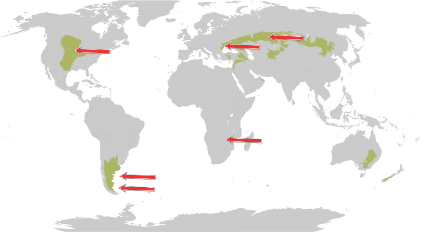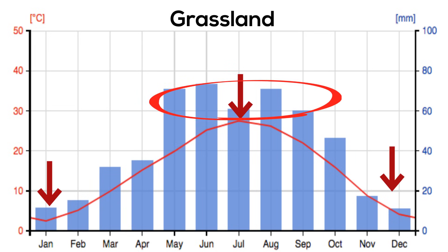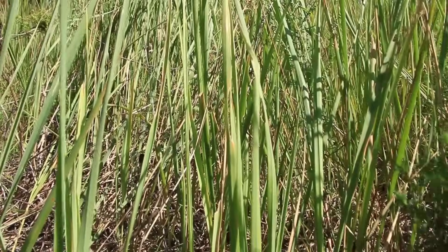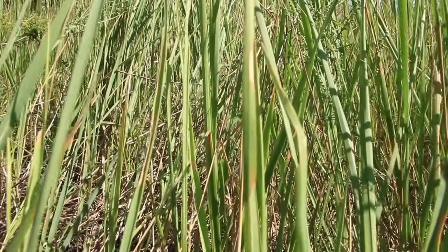Temperatures vary greatly in grasslands throughout the year with hot summers and cold winters. Rainfall is moderate. The amount of annual rainfall influences the height of grass. Taller grasses can be found in wetter regions.